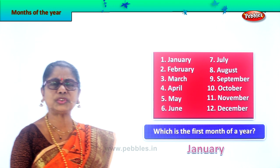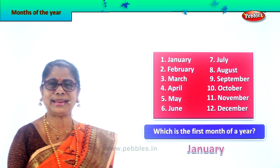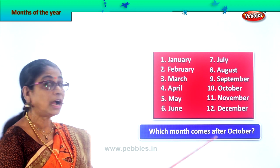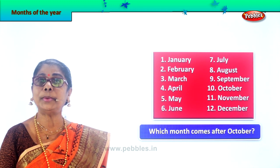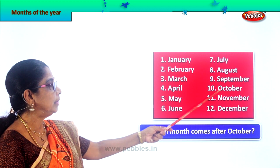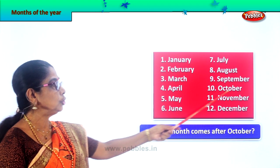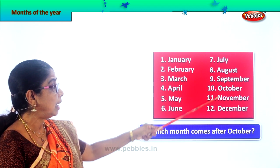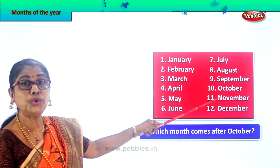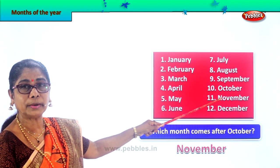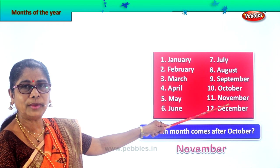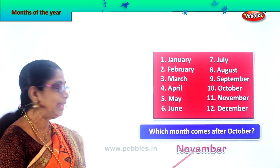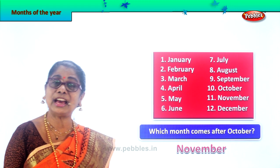Did you enjoy? Let's go on with another new question. Which month comes after October? October here — September, October, school reopened. After October, which month comes? After October, November comes. After October comes November. Spell November — N-O-V-E-M-B-E-R, November.